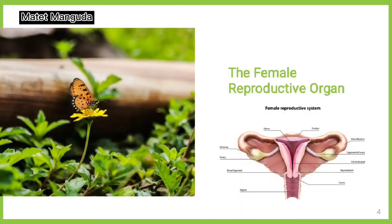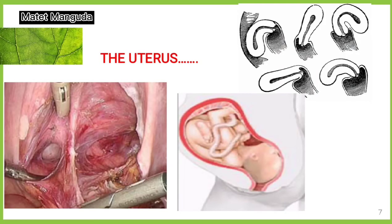Hello guys, my report is about parts of the female reproductive organs. They have a uterus, fallopian tube, and ovaries. The uterus is a hollow, pear-shaped organ that is the home to a developing fetus. The uterus is divided into two parts: the cervix, which is the lower part that opens into the vagina, and the main body of the uterus called the corpus. The corpus can easily expand to hold a developing baby. A channel through the cervix allows sperm to enter and menstrual blood to exit.